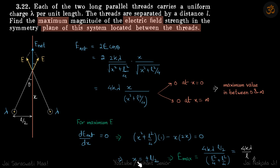We do that and get x is equal to plus minus l by 2, where we get the maximum values. E_max, if you put that l by 2 here, we get E_max as 4k lambda by l, which is our answer.